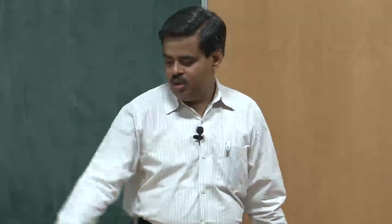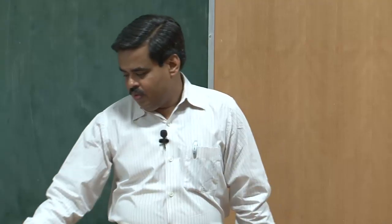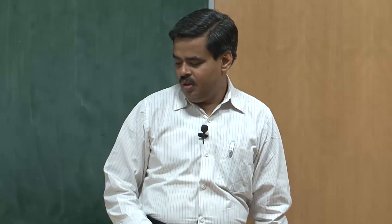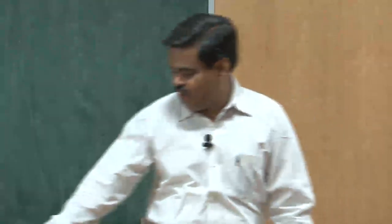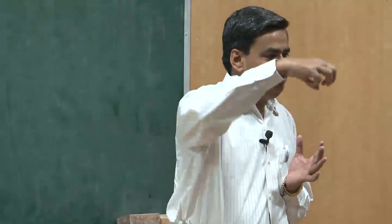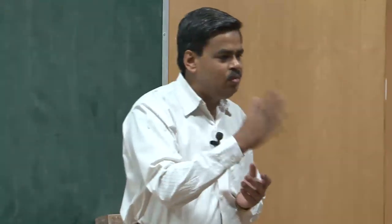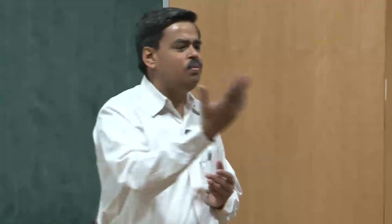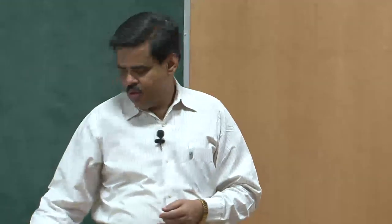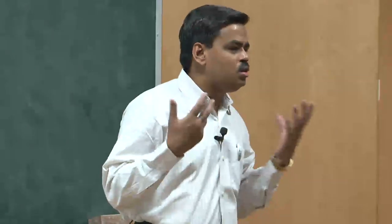The second subtype of adjustment disorder is 'with anxiety,' manifested as nervousness, worry, or jittery behavior. In children, there may be a fear of separation from the major attachment figure — usually the mother, father, or caregiver. For adults, it is basically nervousness, worry, and the jittery feeling that dominates over all the symptoms reflected.